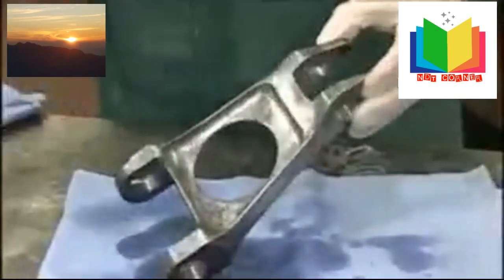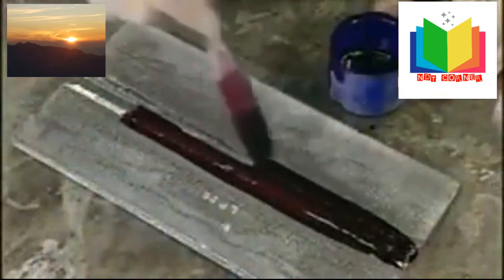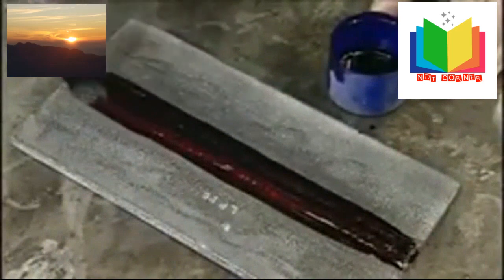Now liquid penetrant inspection works on non-ferromagnetic materials for locating surface defects only. We clean and degrease the component, then apply a brightly colored penetrant which in due course is drawn into the surface breaking defects.